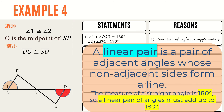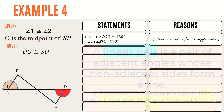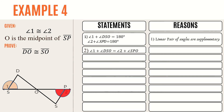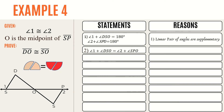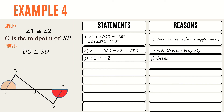For statement 2, we equate both equations from statement 1 since both equal 180 degrees, giving us: angle 1 plus angle DSO equals angle 2 plus angle SPO. The reason is the substitution property. From that, we write statement 3: angle 1 is congruent to angle 2 — the reason is given. From statement 2, we derive statement 4: angle DSO is congruent to angle SPO, since they are supplements of the congruent angles 1 and 2. The reason is: supplements of congruent angles are congruent.